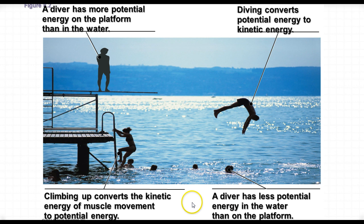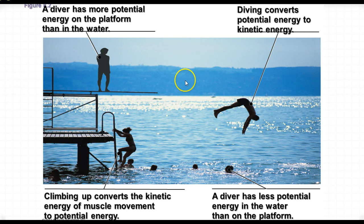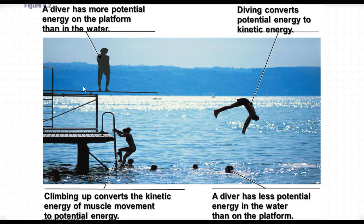Here we have several different energy concepts illustrated with divers on a platform. The diver on top of the platform has more potential energy than the one down in the water because of his position. The action of diving is changing that potential energy into kinetic energy, the energy of motion. And then we have the diver climbing up the ladder, using the kinetic energy of muscle movement to gain potential energy as the swimmer moves up higher.